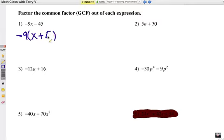Check your answer using the distributive property. Negative nine times x is negative 9x. Negative nine times positive five is negative 45. So you have a monomial on the outside multiplied by a binomial.